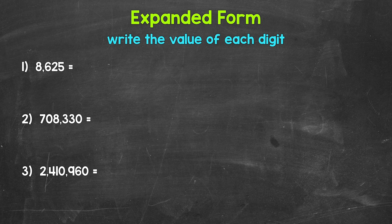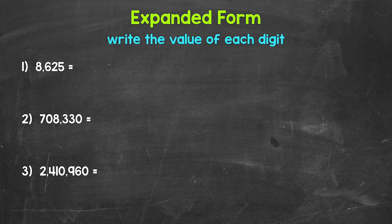Now when we write numbers in expanded form and expanded notation, we expand the numbers out to show the value of each digit. How we do that is going to be slightly different. For expanded form, we show the value of each digit by just writing the value — so how much each digit is worth. For expanded notation, we show the value of each digit using multiplication. The goal of each of these is basically the same. They are very similar, but they are slightly different.